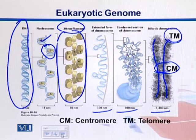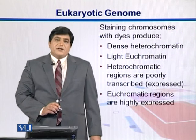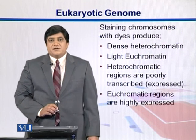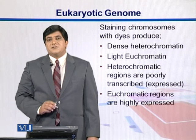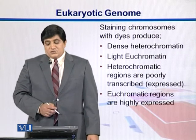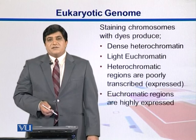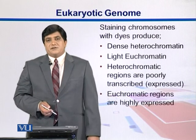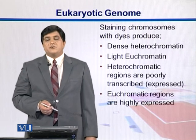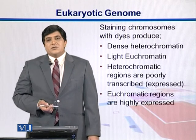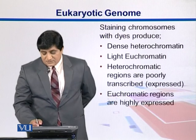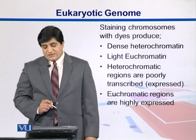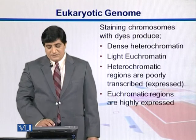Please remember this nomenclature while we discuss heterochromatin and euchromatin. When chromosomes are stained with dyes, they give different coloring patterns. Dense heterochromatin regions are heavily stained and take more color, while light euchromatin regions take less color. In terms of gene expression, the heterochromatin regions are tightly packed so the enzymatic machinery cannot reach there, meaning these regions are poorly transcribed or poorly expressed. Euchromatin regions, on the other hand, are mostly highly expressed.